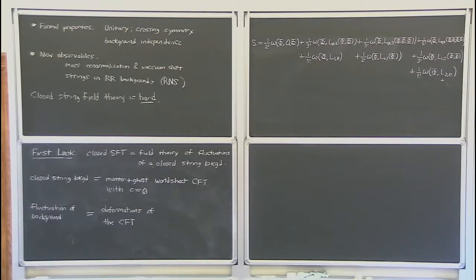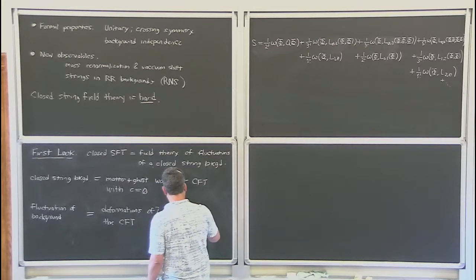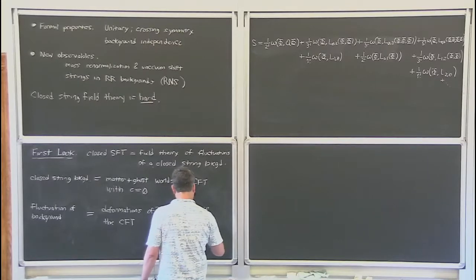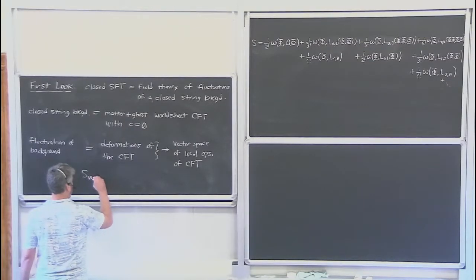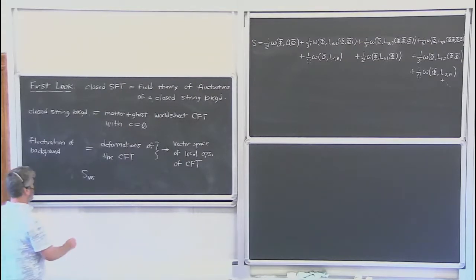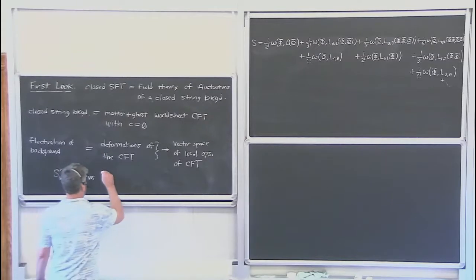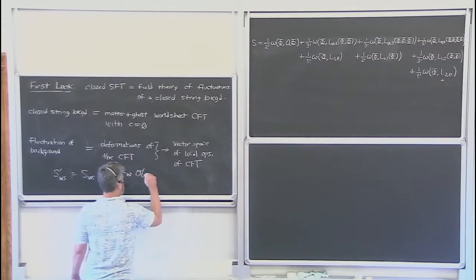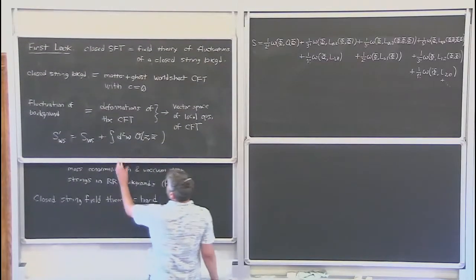A fluctuation of the background should correspond to a deformation of the worldsheet CFT. The deformations of the worldsheet CFT are given by the vector space of local operators of the CFT. Given a reference worldsheet action for the closed string moving in some reference background, you can deform it to a closed string moving in some other background by adding a coupling to a worldsheet operator.